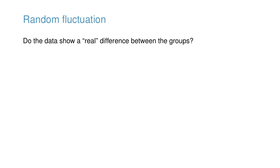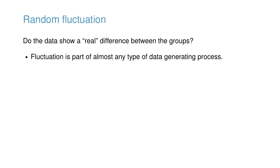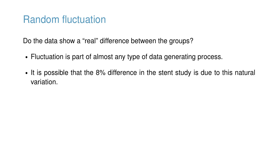Suppose you flip a coin 100 times. While the chance a coin lands heads in any given coin flip is 50%, we probably won't observe exactly 50 heads. This type of fluctuation is part of almost any type of data generating process. It is possible that the 8% difference in the stent study is due to this natural variation. However, the larger the difference we observe for a particular sample size, the less believable it is that the difference is due to chance.